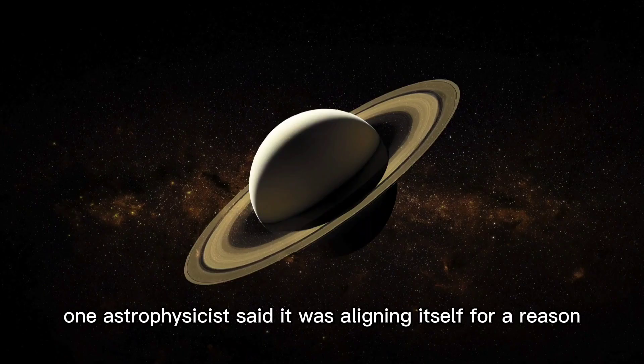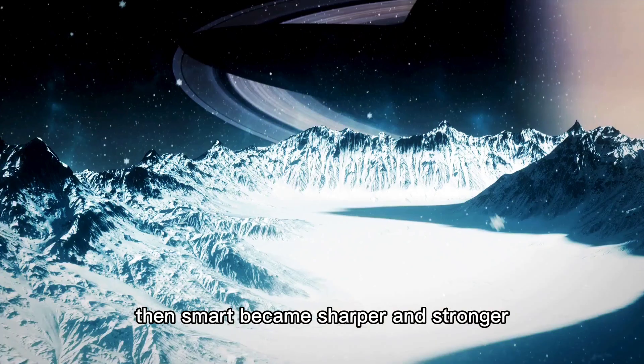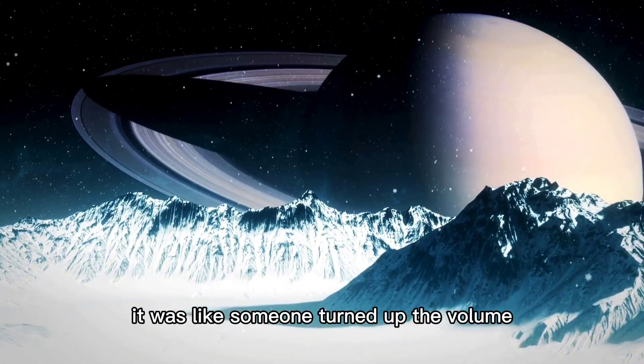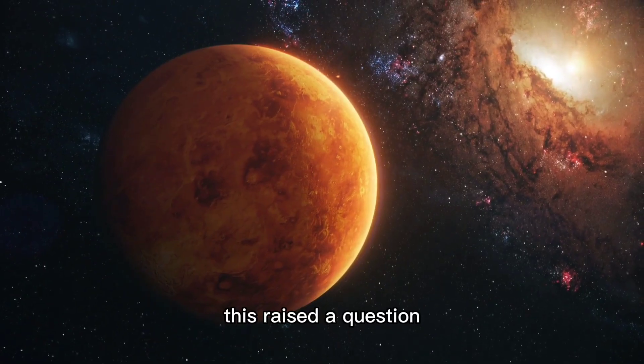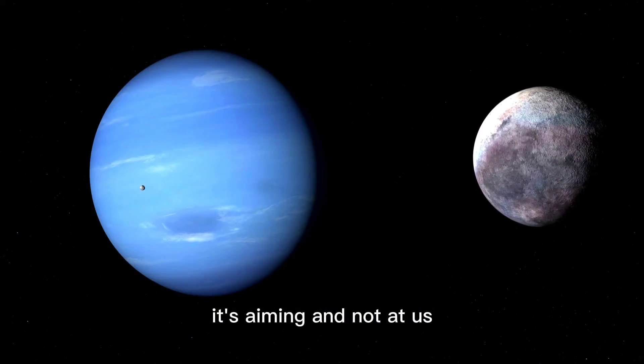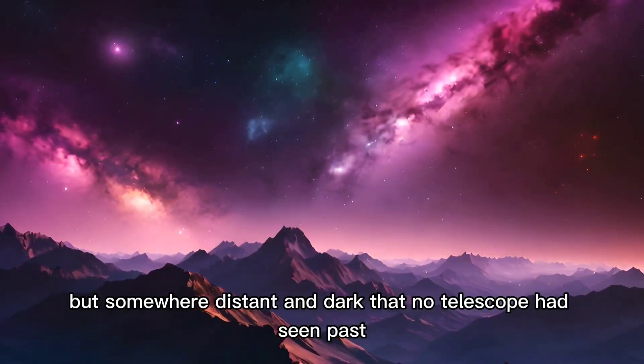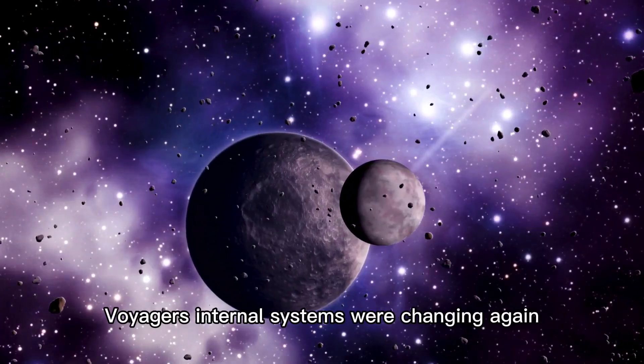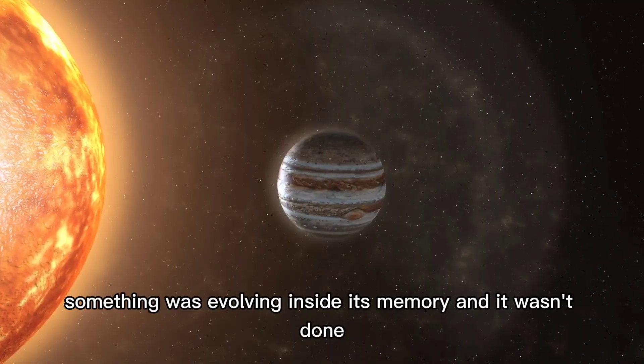When it did, Voyager's signal, once chaotic, then structured, then smart, became sharper and stronger. The data got clearer, and the noise dropped. It was like someone turned up the volume, but it wasn't from Earth. Something was boosting Voyager's output from the other side. This raised a question. Was someone helping us receive the signal from beyond the lens? One tech hit it. It's not just sending data. It's aiming and not at us. Voyager wasn't pointing home, but somewhere distant and dark that no telescope had seen past. As the team processed this, they saw something more disturbing. Voyager's internal systems were changing again. New energy. Minor circuit action. Code where it shouldn't be. Something was evolving inside its memory, and it wasn't done.